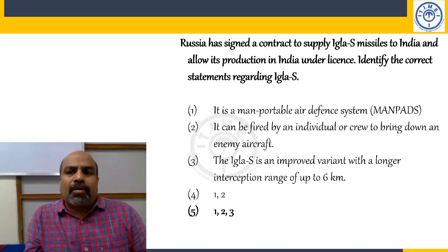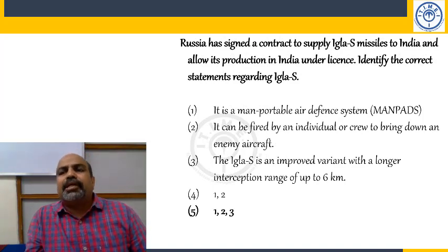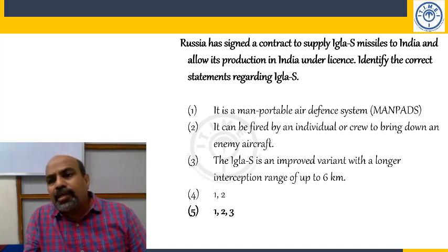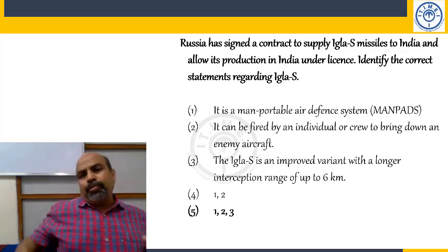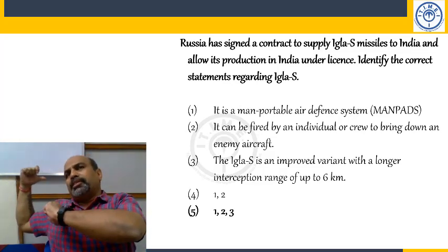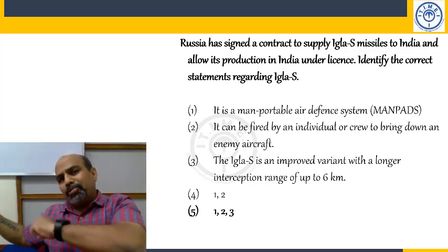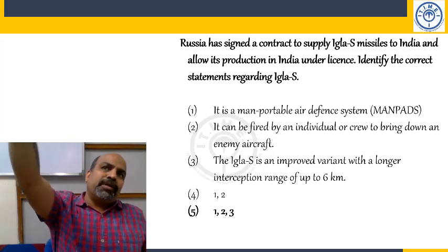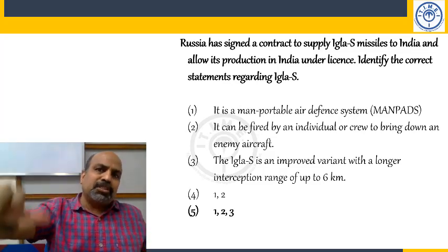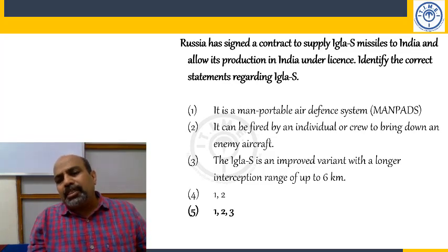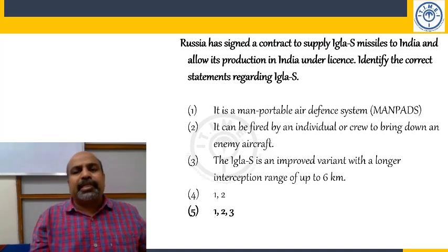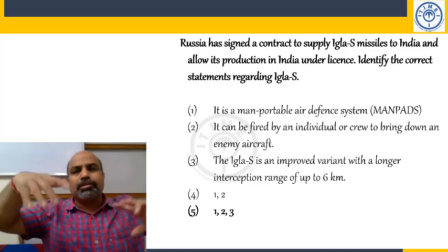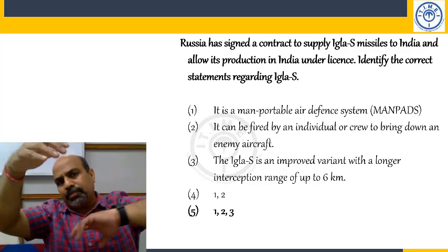Russia signed a contract to supply Igla-S missiles to India and allow their production in India under license. These are man-portable air defense systems that can bring down enemy aircraft, missiles, and drones. The government of India's approach is to first buy from Russia, and then pursue transfer of technology to manufacture them domestically under license.